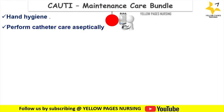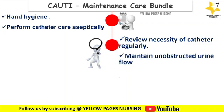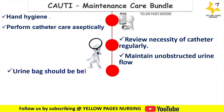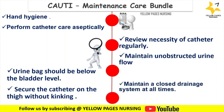The maintenance care bundle involves: performing hand hygiene before and after accessing the catheter, performing catheter care aseptically, reviewing the necessity of the catheter regularly and removing it immediately when no longer needed, and maintaining unobstructed urinary outflow — there should be no kinks, twists, or loops in the tubing. The urinary drainage bag tube should come freely from the Foley catheter, the urine bag should be below bladder level to prevent backflow and ensure gravity drainage, and the catheter should be secured without kinking.